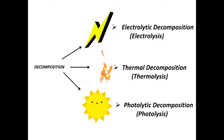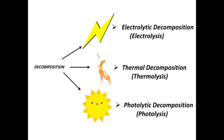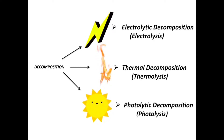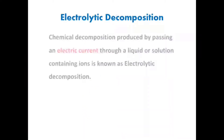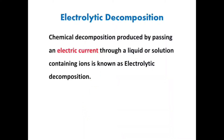Electrolytic decomposition: chemical decomposition produced by passing an electric current through a liquid or a solution containing ions is known as electrolytic decomposition. An example is the splitting of water in the presence of electricity into H₂ and O₂.